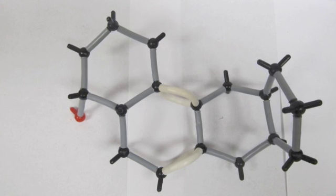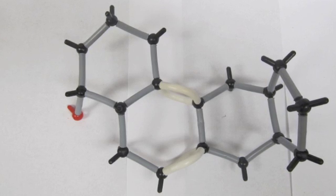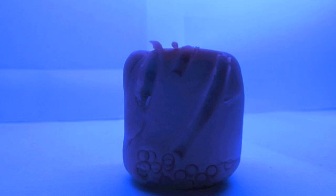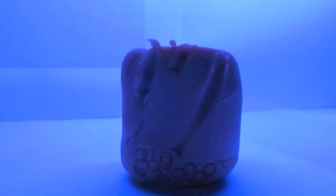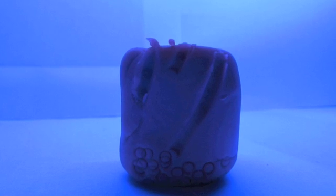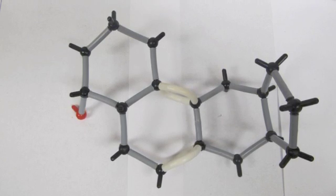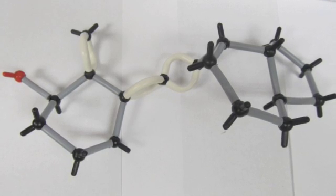Vitamin D synthesis starts out with 7-dehydrocholesterol in the bloodstream. UV light from the sun comes in contact with the epidermis and reacts with epidermal keratinocytes. The keratinocytes transform 7-dehydrocholesterol to vitamin D3.